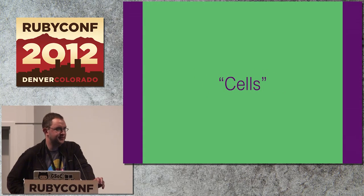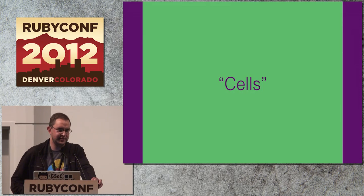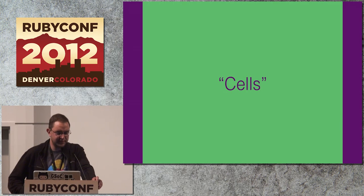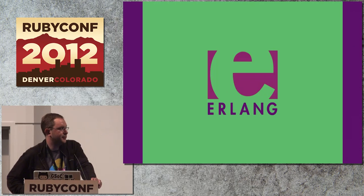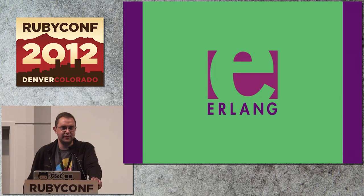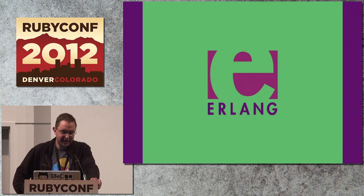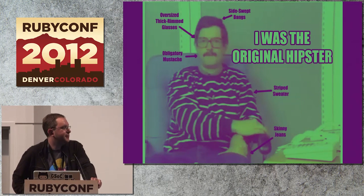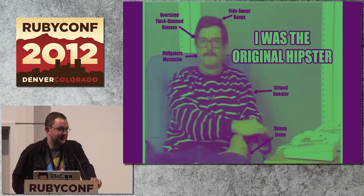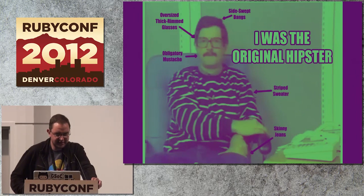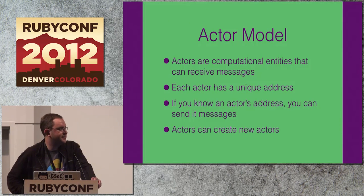I call this abstraction a cell. In the documentation I talk about actors, but Celluloid is really an abstraction on top of actors. I use "cell" to differentiate that from the typical actor you might find in a language like Erlang. Erlang is definitely one of my major inspirations for Celluloid — these guys were into concurrency before it was popular. That's Joe Armstrong, the creator of Erlang. Basically all the major ideas I got for Celluloid came out of Erlang, and the central idea is the actor model.